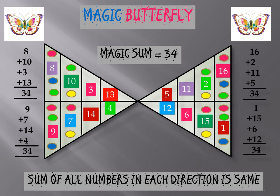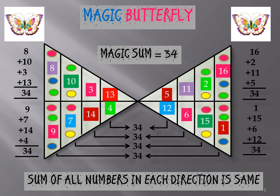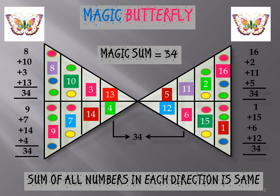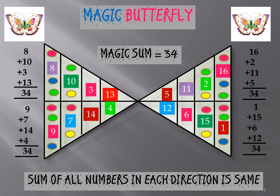And the right wing: 16, 2, 11, 5 make 34, and similarly 12, 6, 15, 1 make 34. Not only that — if you add any two columns from the left or the right wing, you will get 34. The second column sum is 34, third column sum is 34, fourth column sum is 34. Not only this — if you add the left column to any right column, you again get 34.